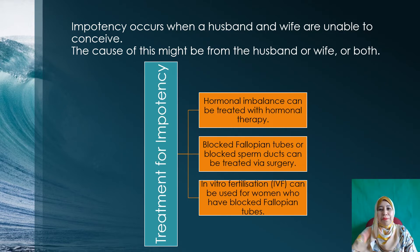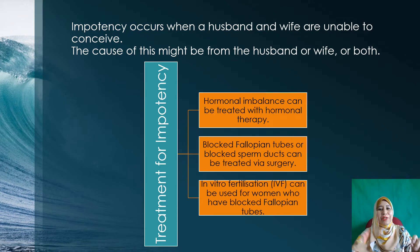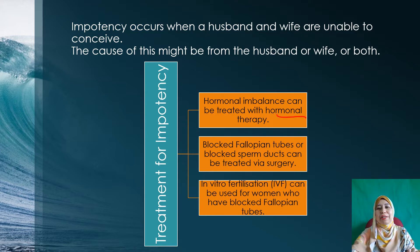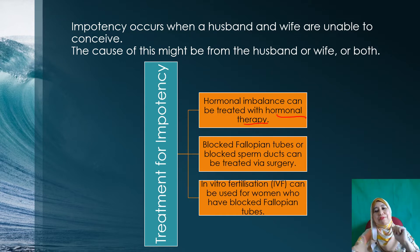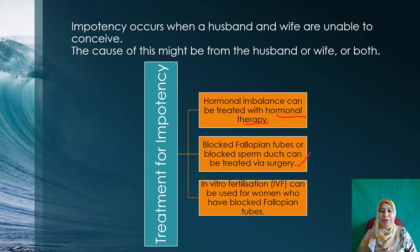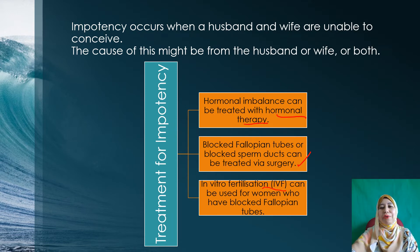Now, what are some possible treatments for impotency? For hormone imbalances, either the wife or the husband can get hormonal therapy. If the fallopian tube of the wife is blocked, or the sperm duct for the husband is blocked, they can treat it via surgery. They can also use in vitro fertilization for the woman who has a blocked fallopian tube.